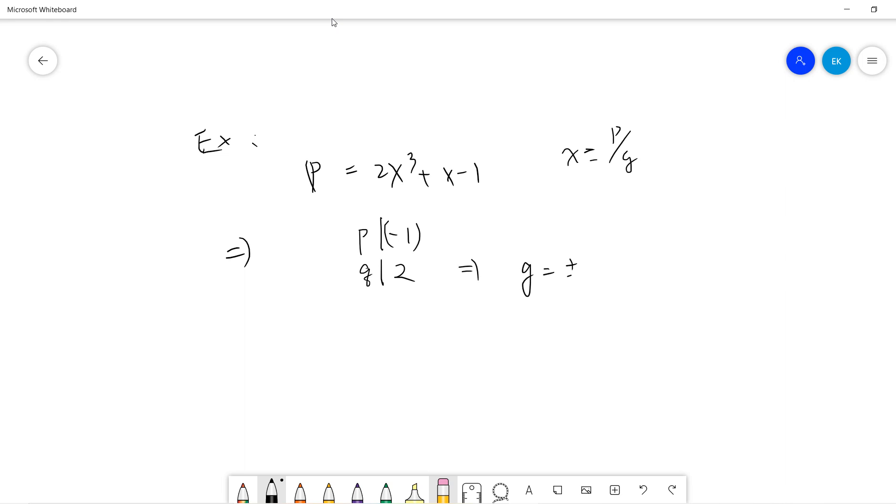So q can be ±1, ±2, and p can only be ±1. So the possible rational roots are just ±1, ±1/2. And then you can directly check that p cannot be 0 if you plug x equals ±1 or ±1/2. So this tells you that p has no rational roots.